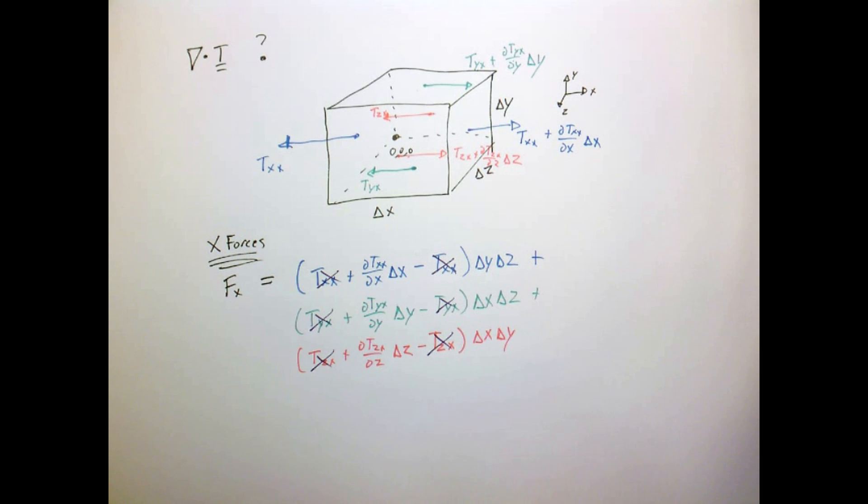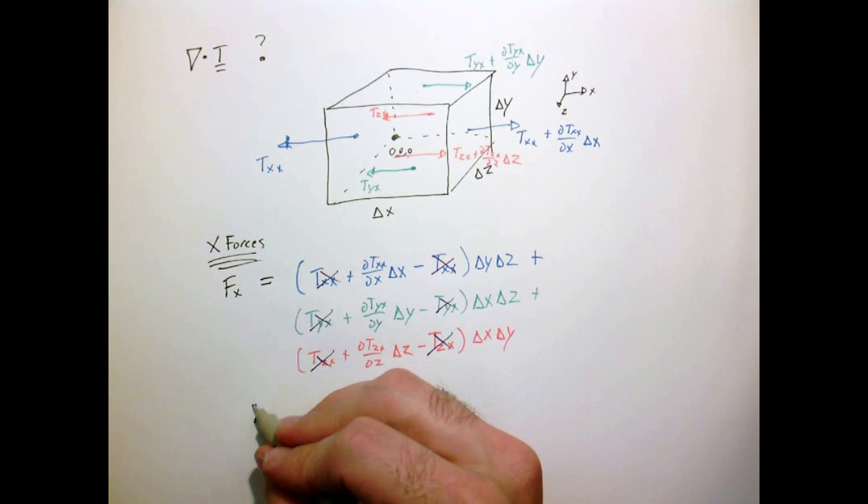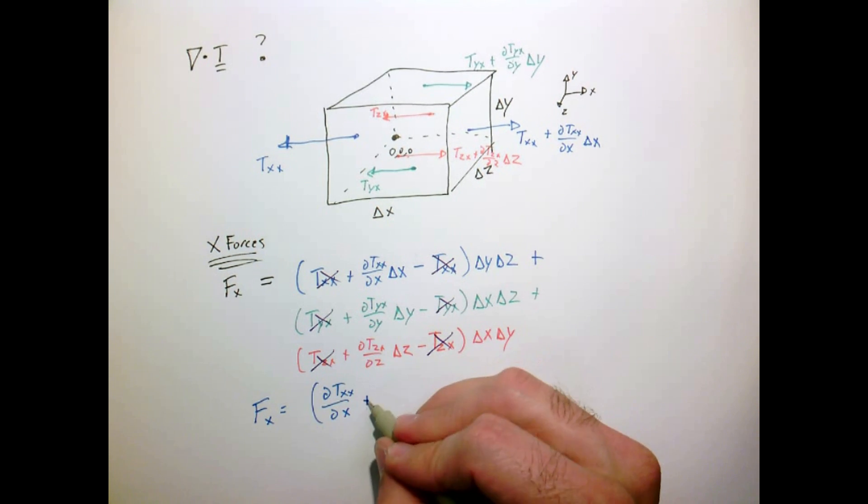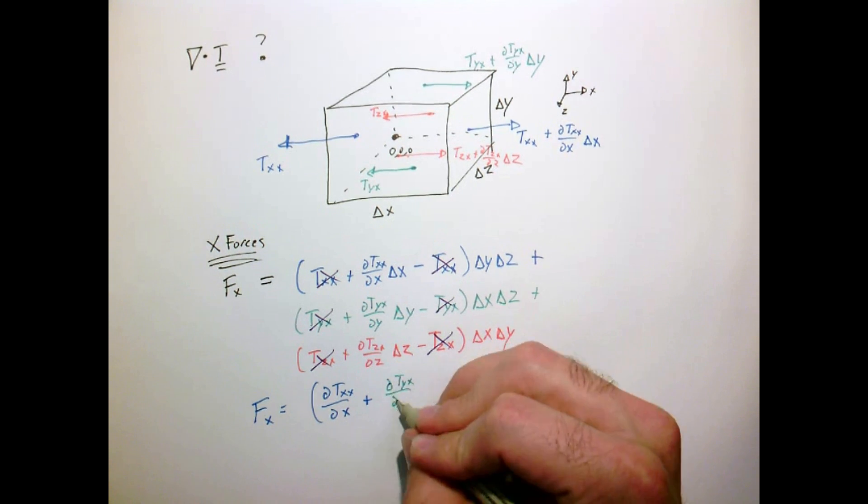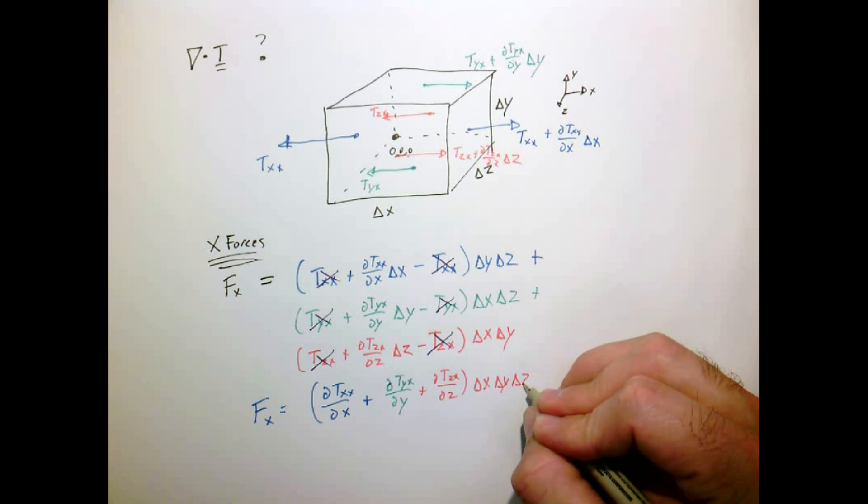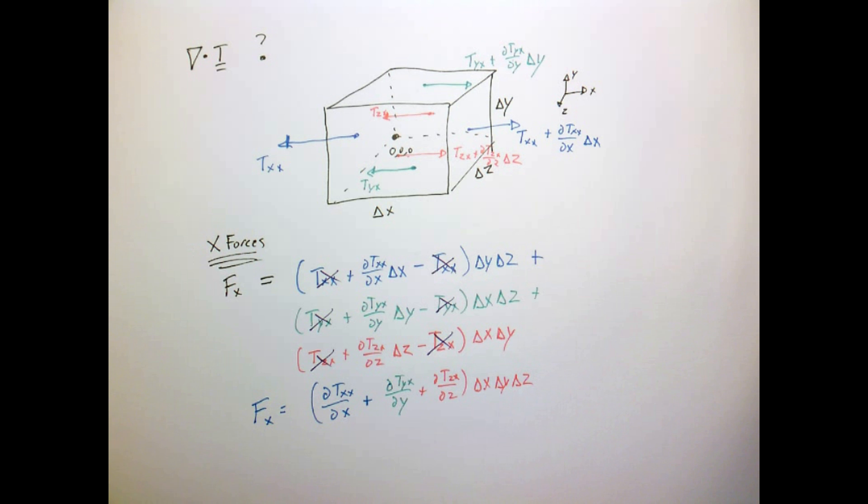Now we can see several things cancel here. And what we're left with is that the force in the x-direction is the first component what we calculated on the last page when we did the divergence of the stress tensor.